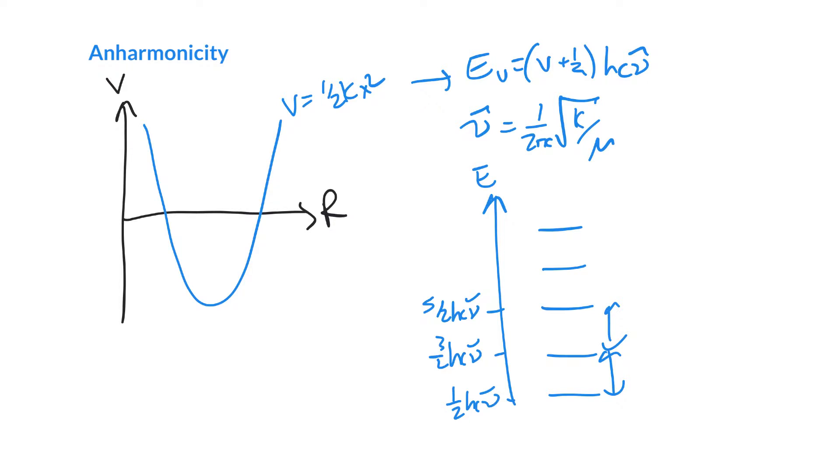We went ahead and we said that there is a selection rule. The selection rule is that delta V can change by one unit. So you can go up from one level to the other, or you can go down from one level to the other, but you can't ever change by more than one. That leads to an infrared spectrum where essentially we've got a single line at the classical vibrational frequency, and so if this is percent transmittance it would look like an upside-down absorption.